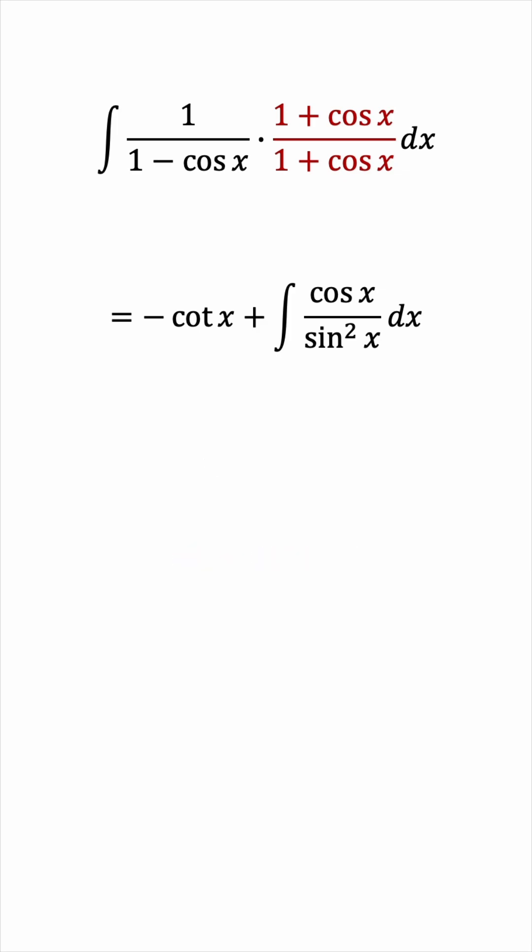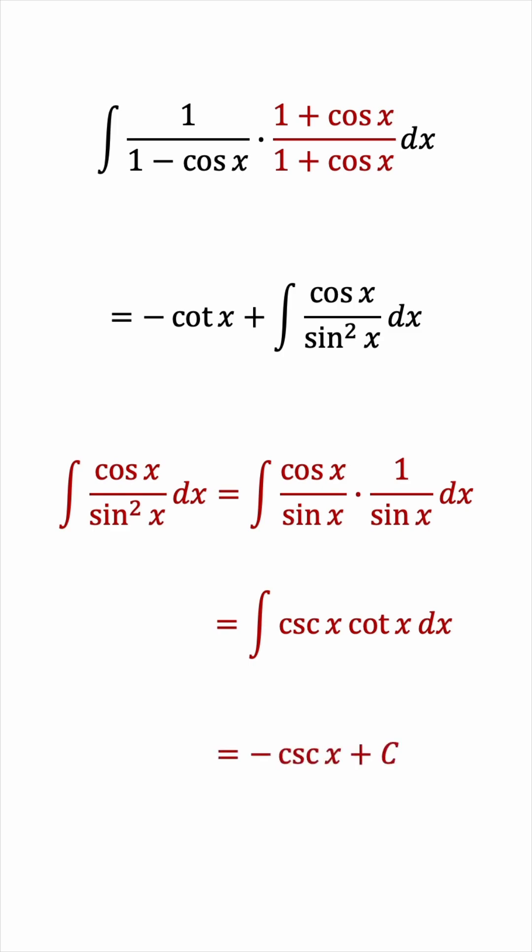I want to rewrite this as cosine over sine times 1 over sine. And then cosine over sine would be cotangent. 1 over sine would be cosecant. And this is something that we know the antiderivative of very well. Perhaps it'll be easier for you to see if I rearrange it as cosecant x cotangent x, like this. Does this look familiar? The antiderivative is negative cosecant x.